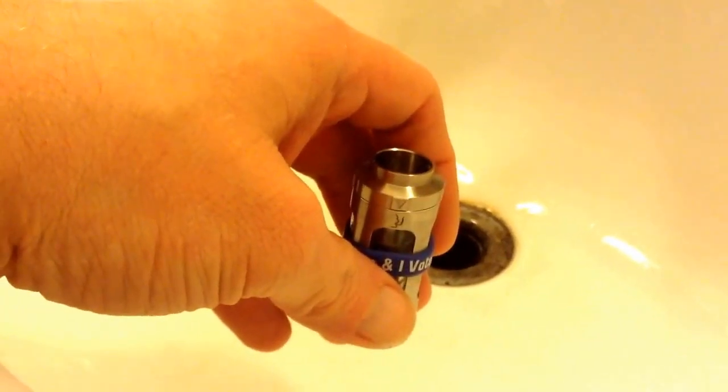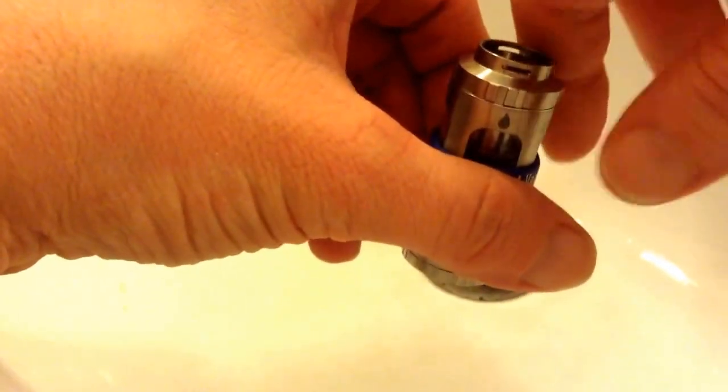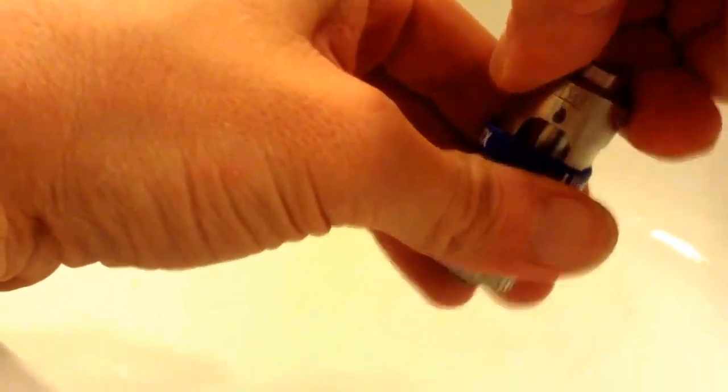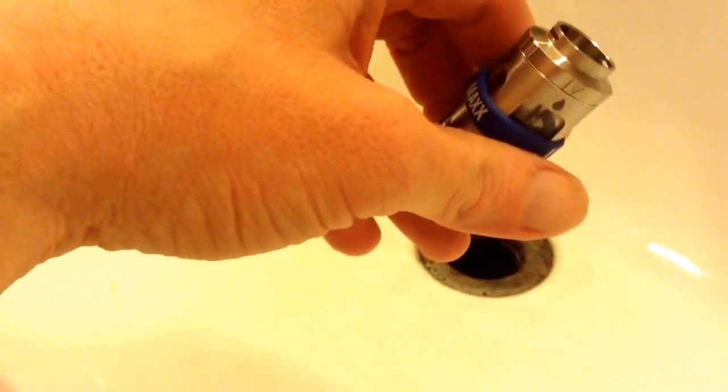And now to fill it up, go ahead and turn that arrow from vape over to drip. And then that opens up the holes on the inside and you're ready to fill it up.